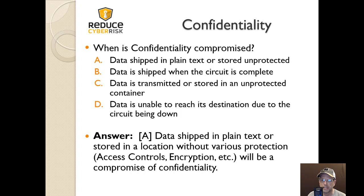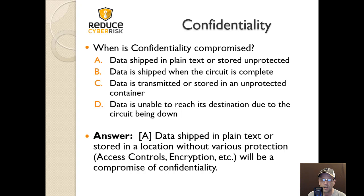Next question: when is confidentiality compromised? A) data is shipped in plain text or stored unprotected, B) data is shipped when the circuit is complete, C) data is transmitted or stored in an unprotected container, or D) data is unable to reach its destination due to the circuit being down. The answer is A — data shipped in plain text or stored in a location without protections.